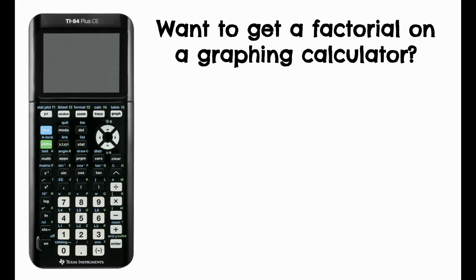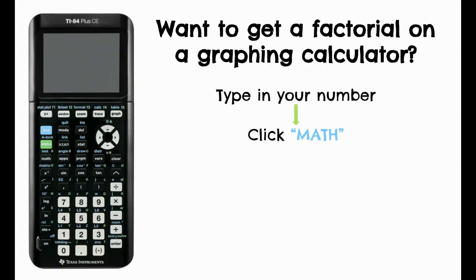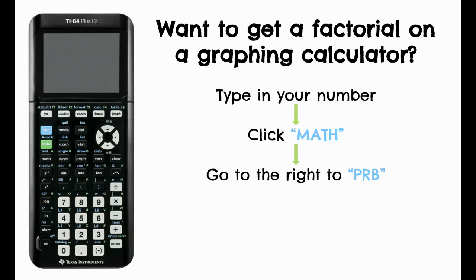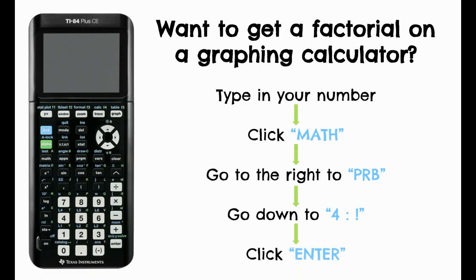If you want to get a factorial using a graphing calculator, type in your number, then click the math button on the left-hand side right under the alpha button, then go all the way to the right to PRB which stands for probability. Then go down to the fourth option which is the factorial symbol or the exclamation mark, and hit enter twice to get your final answer.